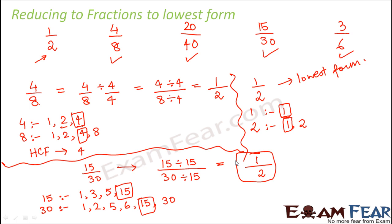So normally what happens is whenever you have a fraction which is an equivalent fraction of some other fraction, it can be reduced to that lowest form of fraction. For example, here 1 by 2, 4 by 8, 15 by 30, these are all equivalent fractions because they basically mean the same thing. They all actually refer to 1 by 2.